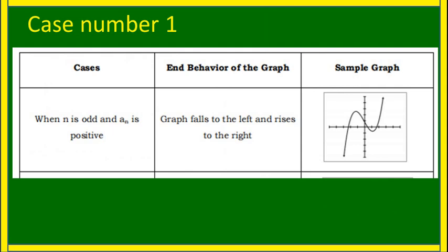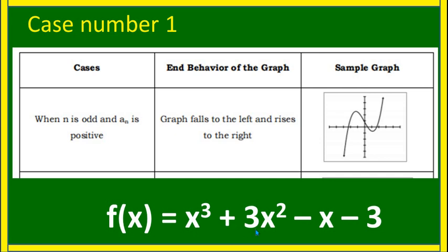Case number one: when n is odd and a sub n is positive, the graph falls to the left and rises to the right. Example: f(x) = x³ + 3x² − x − 3. The degree is 3, which is odd, and the leading coefficient is 1, which is positive. So the end behavior is falling to the left and rising to the right.